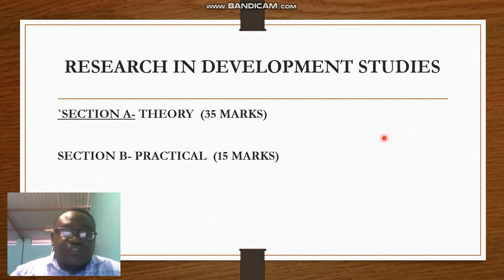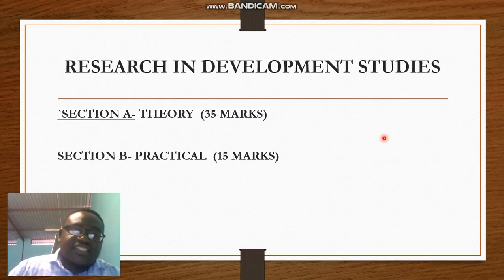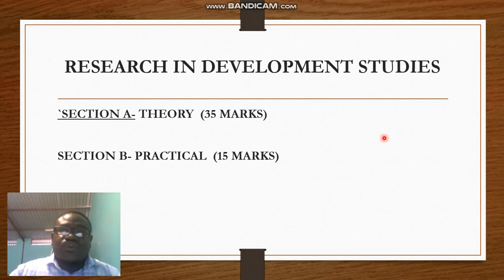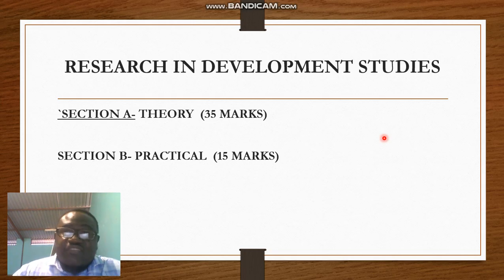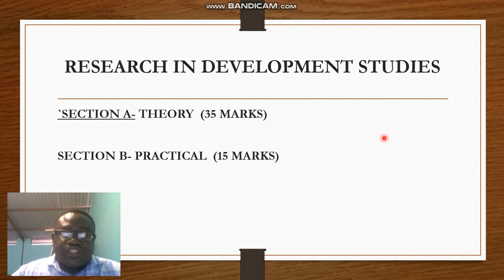After Section A, we have Section B. Section B is always practical and is out of 15 marks. At the start of Section B, there is a statement made by the examiner saying that in your Development Studies course you were asked by your teacher to carry out a research on a development issue. The purpose of Section B is to ask learners to give findings on the research they carried out while they were in school.